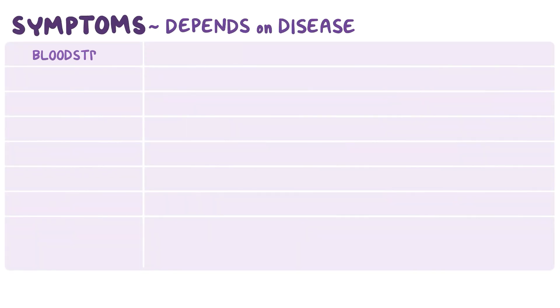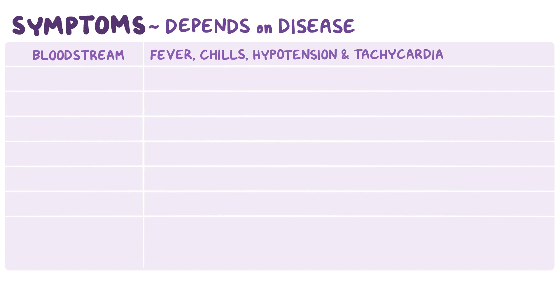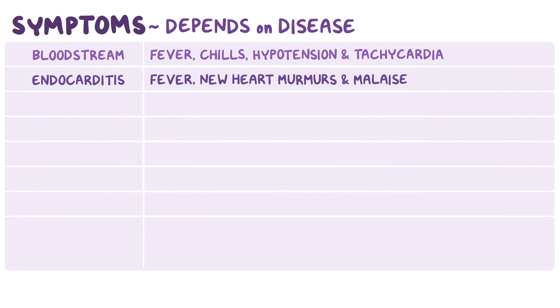Symptoms depend on the disease. With a bloodstream infection, there might be fever, chills, hypotension, and tachycardia. With endocarditis, there might be fever, new heart murmurs, and malaise.